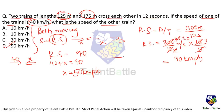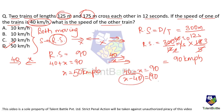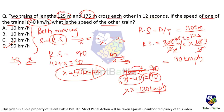If both trains move in the same direction, speeds subtract: x − 40 = 90, giving x = 130 km/h. However, 130 km/h is not among the answer options, so that case is ruled out. The correct answer is 50 km/h, option D.